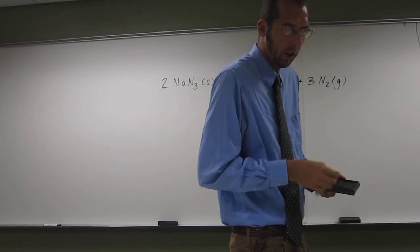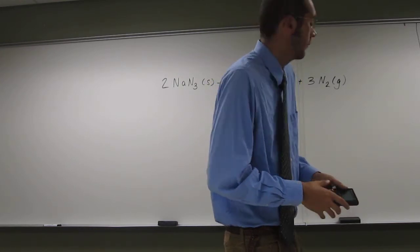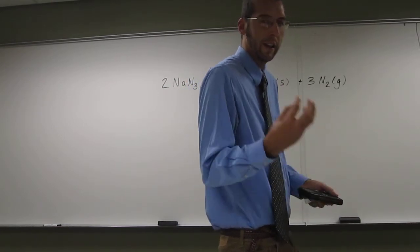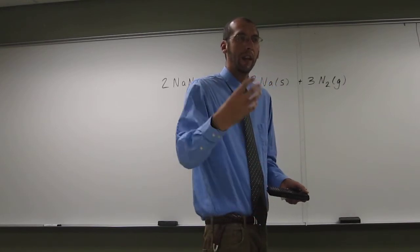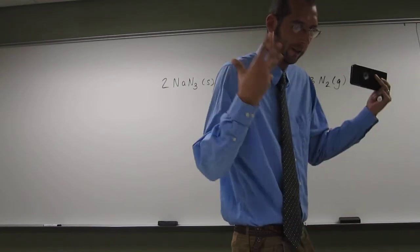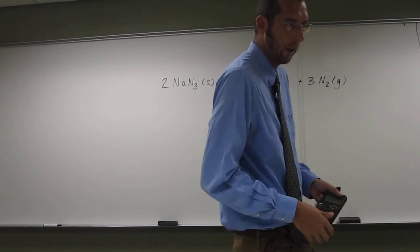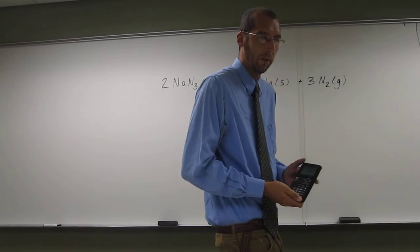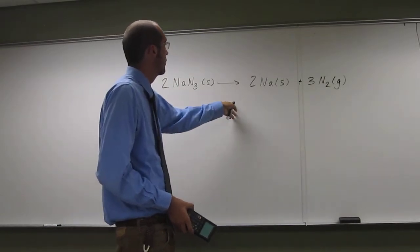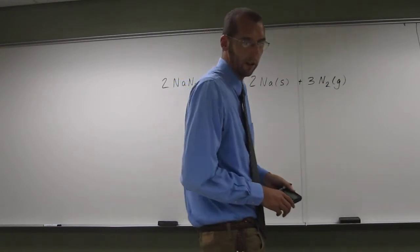It says the reaction used in the deployment of automobile airbags is the high temperature decomposition of sodium azide, NaN3 solid, to produce nitrogen. So that's actually what's in your car before you get into an accident, and then this equation happens. It says to produce nitrogen gas according to the following equation, and that nitrogen gas is what actually blows up the airbag. The equation is this chemical equation: 2 sodium azide solid goes to 2 sodium solid plus 3 nitrogen gas.